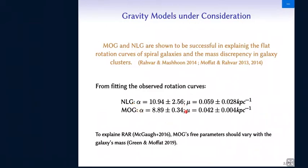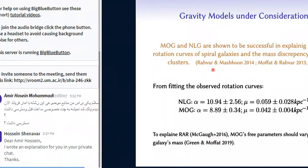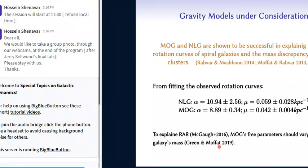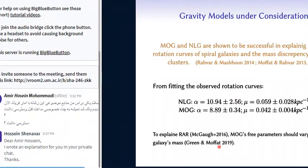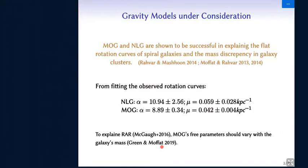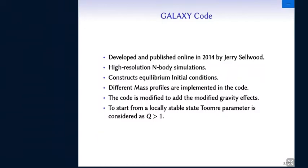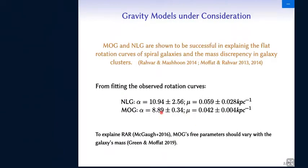The value of these free parameters - some mean values for these two parameters have been introduced in these works by using the fits of the observed rotation curves. However, recent works show that for example, in order to explain the radial acceleration relation by McCaugh and his colleagues, MOG's free parameters should vary with the galaxy's mass. The three parameters of MOG need to vary in different environments and the value is actually dependent to the inverse value of the mass of the system. So just remember here that we have two free parameters for each of our models.